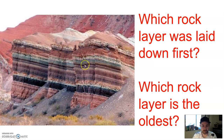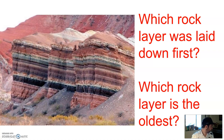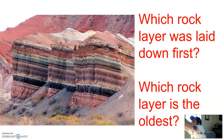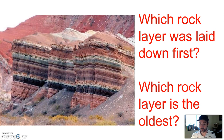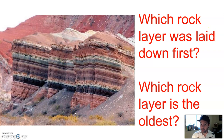All of these are different layers of rocks. The question I have is: of these layers of rock, which layer was laid down first? Therefore, which layer of rock is the oldest?